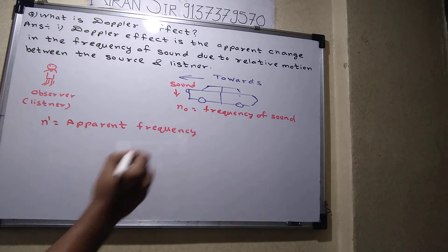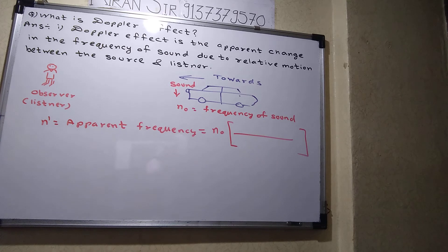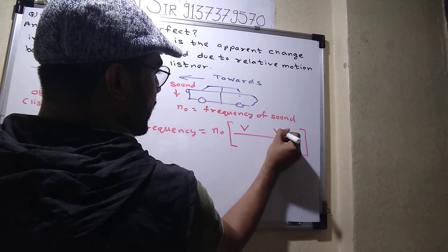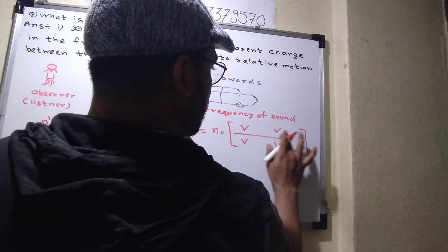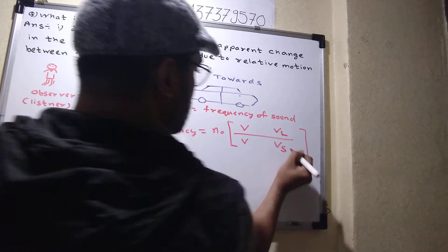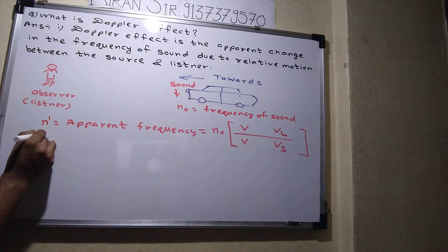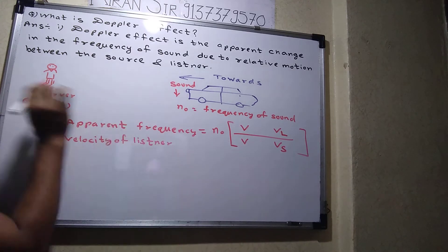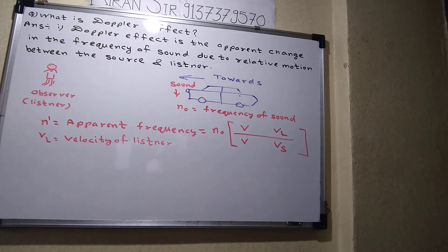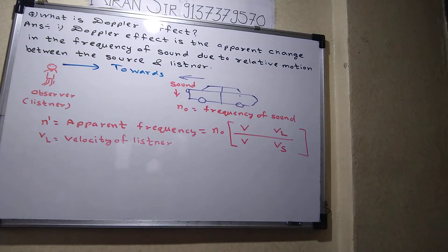The apparent frequency formula is: n' = n₀ × (V ± Vl) / (V ∓ Vs), where n₀ is the actual frequency of the sound, V is the velocity of sound, Vl is the velocity of the listener, and Vs is the velocity of the source. If both the observer and source are moving towards each other, there is definitely an increase in the frequency of that sound.